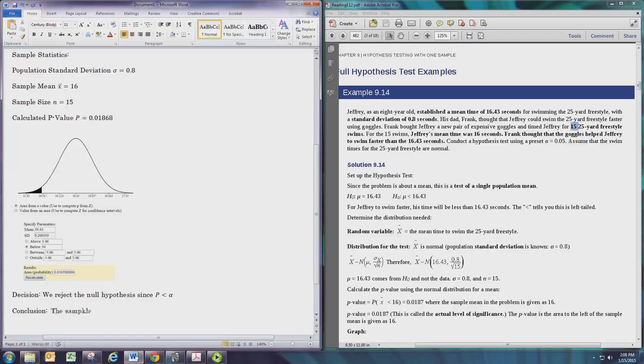So we can say something along the lines of: the sample data supports the claim that Jeffrey swims faster with the new pair of goggles. And the hypothesis test is now complete.